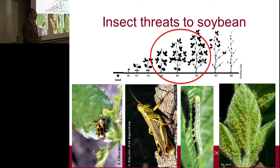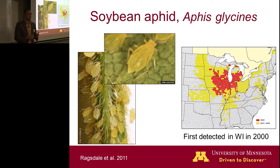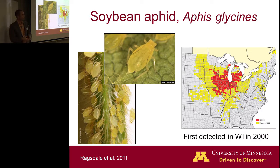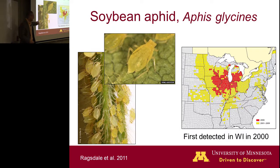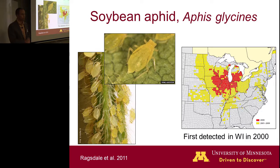Among all these pests in the north central region, especially in Minnesota, the soybean aphid is the most significant arthropod pest. If you look at a picture of just one little aphid, they kind of look cute and cuddly, not very menacing. But when they gang up in hundreds and thousands per plant, that's when you encounter problems.